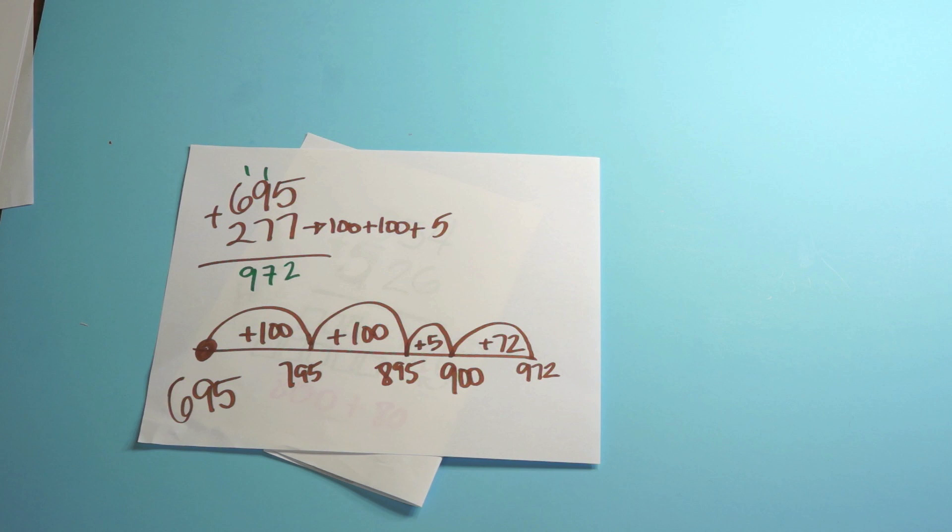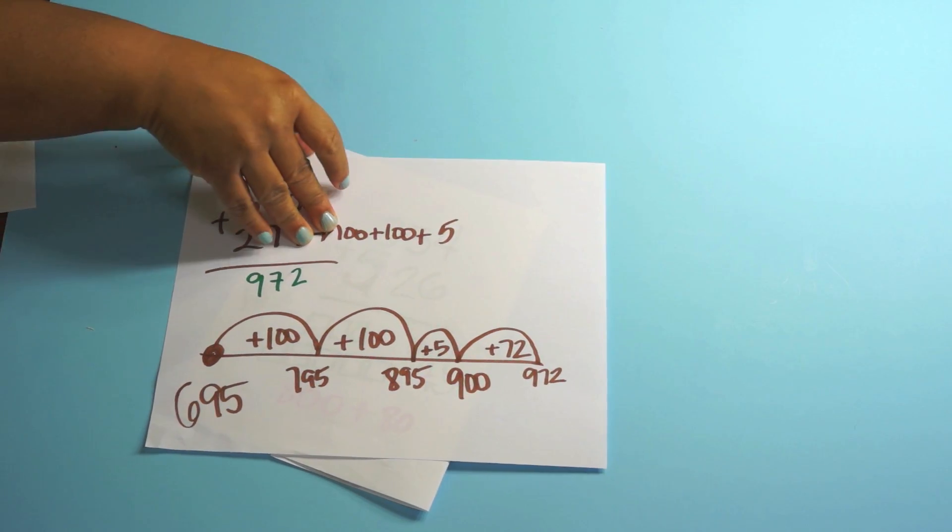Open number line is a named strategy in the common core. You should definitely be using that with your kids. So the point here is that kids should know how to add within 1000 using a variety of strategies.